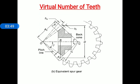In figure B, an imaginary spur gear is constructed in a plane perpendicular to the tooth at the large end. Observe that rb is the pitch circle radius of this imaginary spur gear and z-dash is the number of teeth on this gear. The gear is called the formative gear, and the number of teeth z-dash on this gear is called the virtual or formative number of teeth.